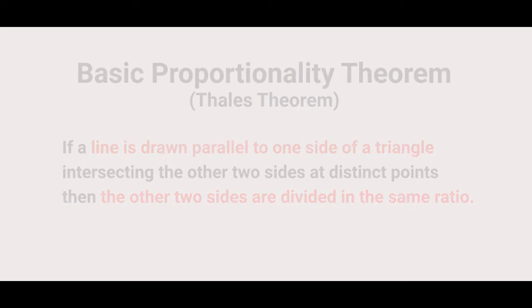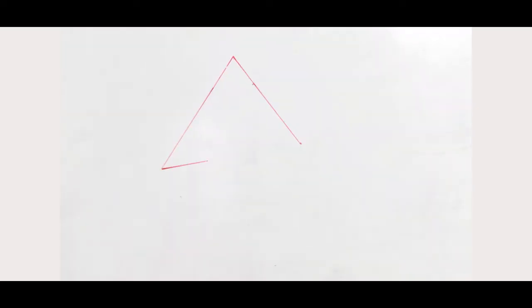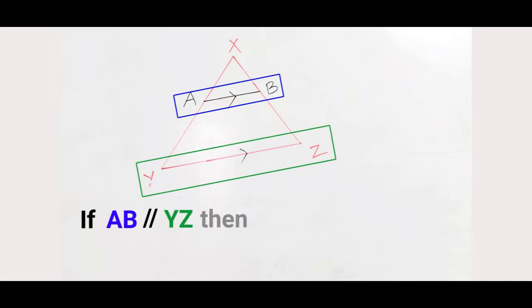So let us try to verify this. So here we have a triangle X, Y, Z. We shall draw a line which is parallel to one side of the triangle, YZ, and we shall name this line AB. So according to the theorem, if AB is parallel to YZ, then XA by AY is equal to XB by BZ.